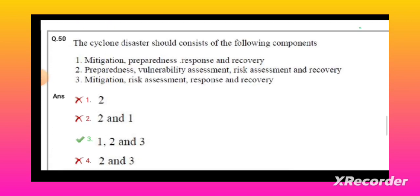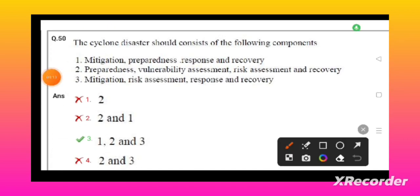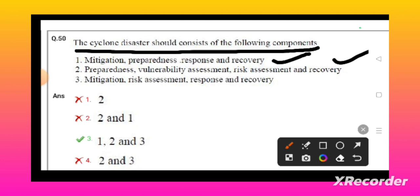The cyclone disaster mitigation strategy should consist of the following components: first one will be mitigation, preparedness, and response and recovery; preparedness, vulnerability assessment and risk assessment, and recovery; mitigation, risk assessment, response and recovery - all of these should consist of the components of cyclone disaster mitigation strategy.